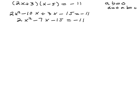Now add 11 to both sides. We're getting 0 on one side now. 2x squared minus 7x minus 15 plus 11 equals negative 11 plus 11.